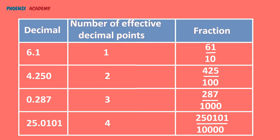4.250 — the number of effective decimal places are 2, so the numerator becomes 425 and the denominator becomes 100. 0.287 — the number of effective decimal places are 3, so the fraction becomes 287/1000. 25.0101 — the number of effective decimal places are 4, so the numerator becomes 25101 and the denominator becomes 10,000.